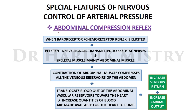Abdominal compression reflex: when the baroreceptor or chemoreceptor reflex is elicited, efferent nerve signals are transmitted to skeletal muscles, mainly the abdominal muscles, causing their contraction. This compresses all the venous reservoirs of the abdomen, translocating blood from the abdominal vascular reservoir towards the heart, increasing venous return and hence cardiac output.